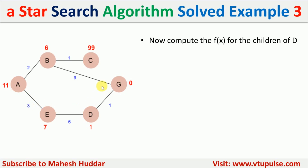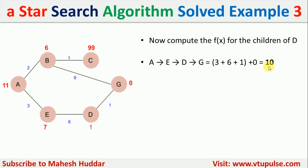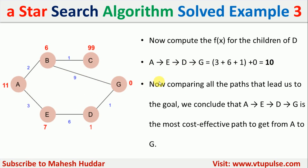The distance from A to G via this path is 3 + 6 + 1 + 0 = 10. Comparing this against all paths found so far, cost 10 is the smallest value. This means A→E→D→G is the most cost-effective path from source node A to goal node G. This is the final optimal path. In this video I have explained how to apply the A* search algorithm to a given graph to find the shortest path from the source node to the goal node.